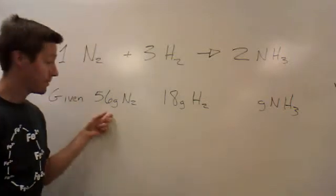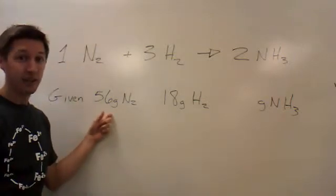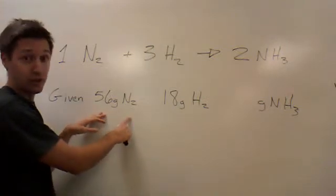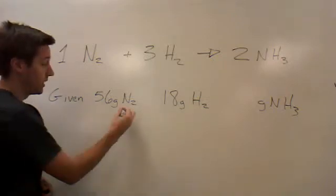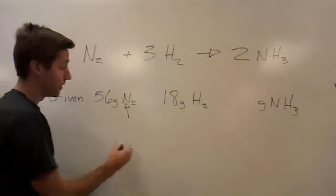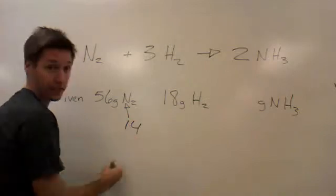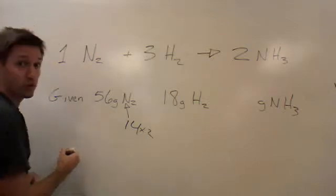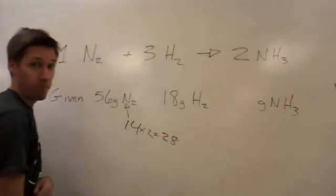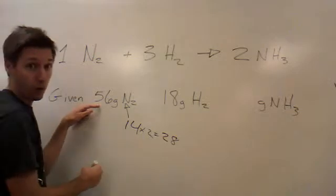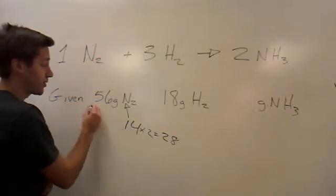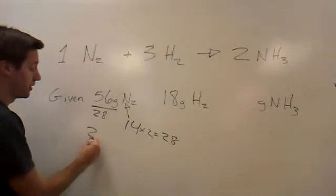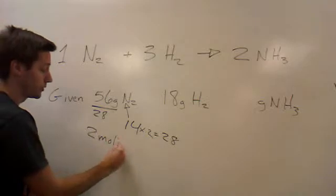How do we do that? We're going to take the mass that we're given and divide by what the mass of one is. We have 56 grams of nitrogen. How much does nitrogen weigh? On the periodic table, every nitrogen has a mass of 14. We have two of them, so the mass of N2 is 28. How many moles of nitrogen do we have? 56 grams divided by 28 grams per mole. We have a total of 2 moles of nitrogen.